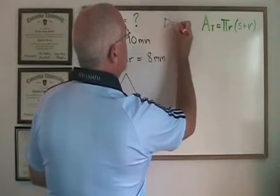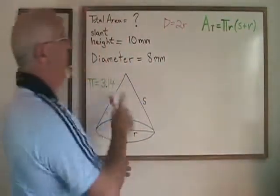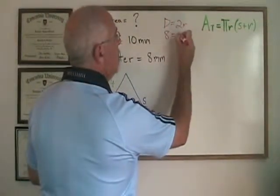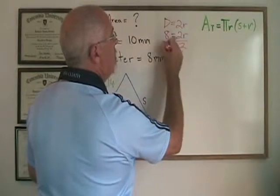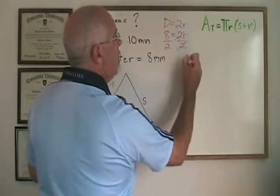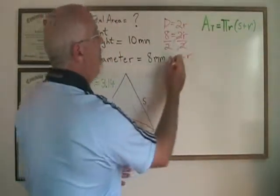Diameter is equal to 2 times radius. If the diameter is 8, then 8 equals 2r. Divide both sides by 2, cancel, cancel. r is equal to 8 divided by 2, which is 4.